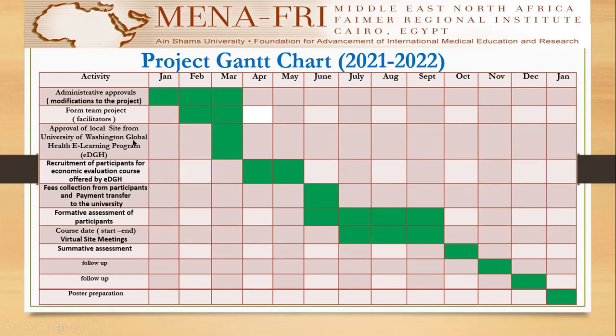Overlapping in February and March, we were forming the project team, including facilitators. In March, the first design was to design a course. However, due to the limited time for the project, we approved a local site at the Ministry of Health from the University of Washington Global Health Learning Program as a coordinator for the course offered by the university.